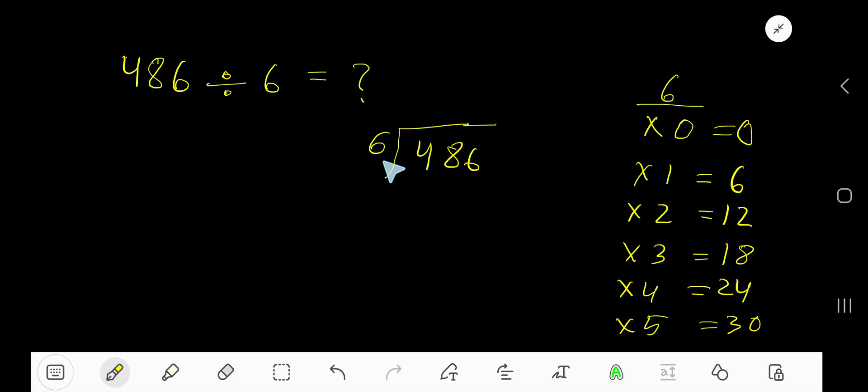486 divided by 6. Here 6 is a divisor, so we need the multiplication table of 6: 6 times 0 is 0, 6 times 1 is 6, 6 times 2 is 12, 6 times 3 is 18, 6 times 4 is 24, 6 times 5 is 30.